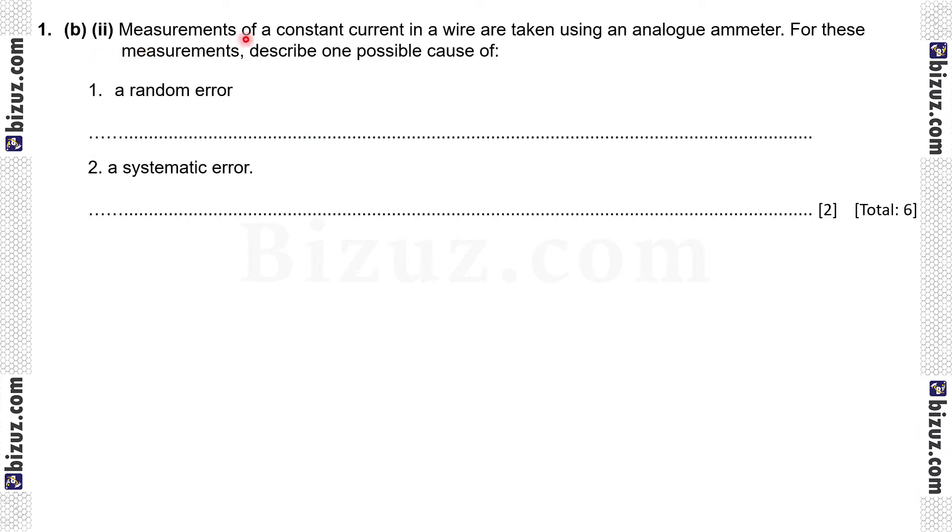1b2, measurements of a constant current in a wire are taken using an analog ammeter. For these measurements describe one possible cause of number one, a random error: reading scale from different angles or wrongly interpolating between scale readings. If you measure from different angles the reading will be slightly different or if the scale is wrongly interpolating, reading may be slightly different, may be increased or decreased. That's why it is random error. Then a systematic error: zero error or wrongly calibrated scale. That means there may be zero error. That's why the reading will be either greater or smaller than the actual value which is systematic error.